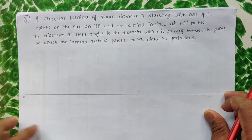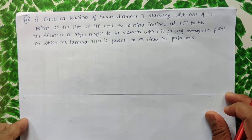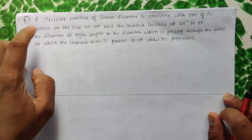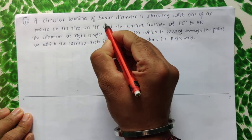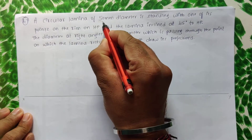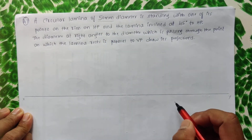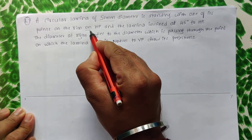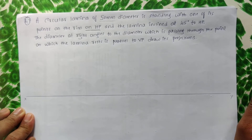Hello guys, here is a problem on circles. Let us read the problem now. A circular lamina of 50 mm diameter is standing with one of its points on the rim on HP.